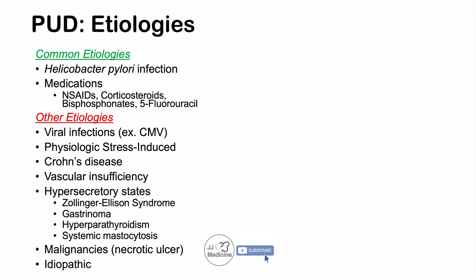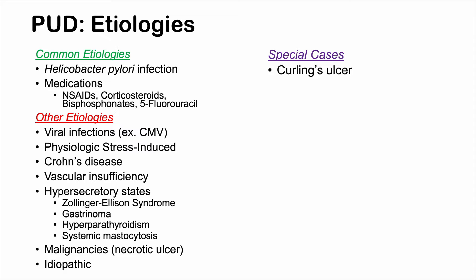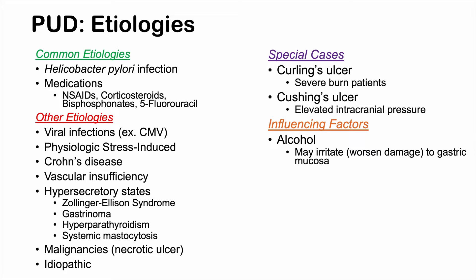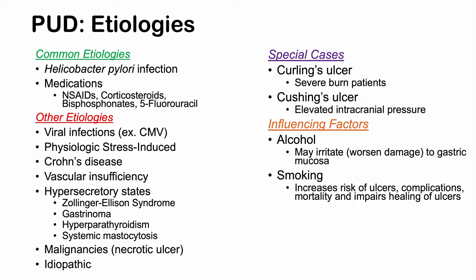Special cases of peptic ulcer disease include Curling's Ulcer, which occurs in severe burn patients, and Cushing's Ulcer, which is related to elevated intracranial pressure. There are also influencing factors that make ulcers worse without necessarily causing them — including alcohol, which may irritate or worsen damage to the gastric mucosa, and smoking, which seems to increase the risk of ulcerous complications, mortality, and impairs healing of ulcers.